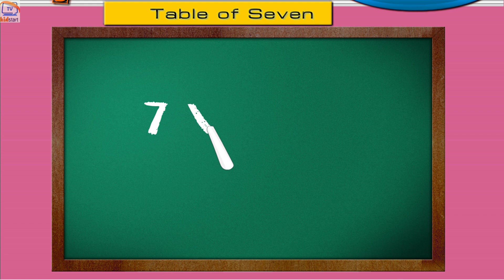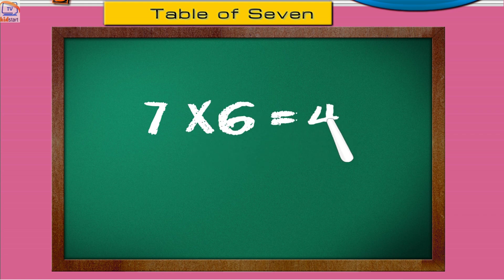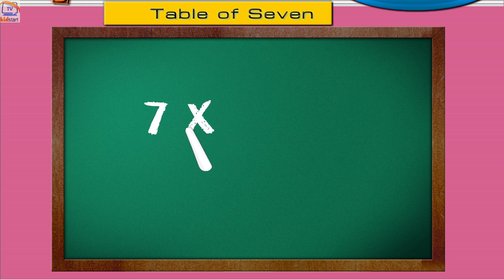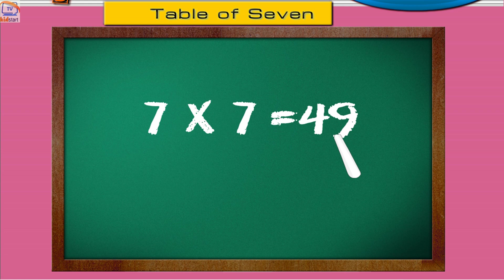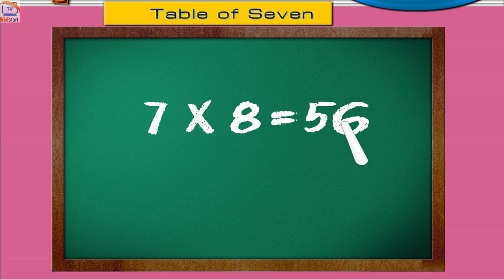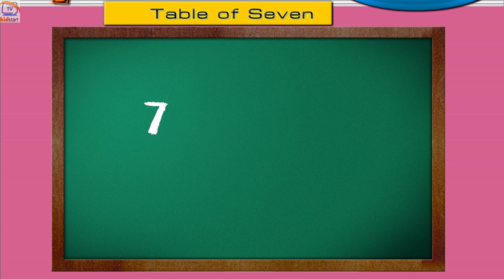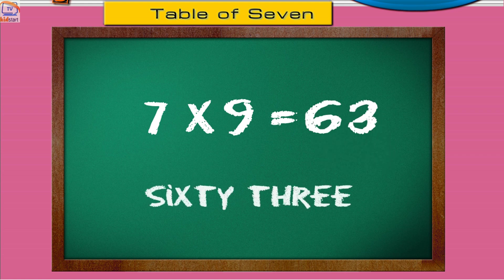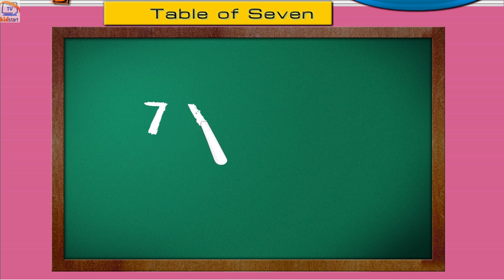Seven sixes are forty-two. Seven sevens are forty-nine. Seven eights are fifty-six. Seven nines are sixty-three. Seven tens are seventy.